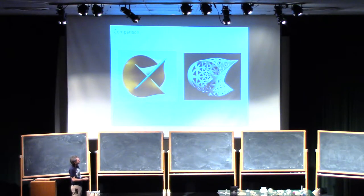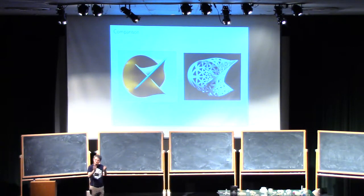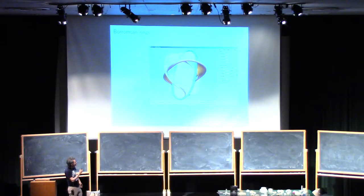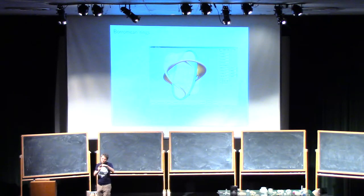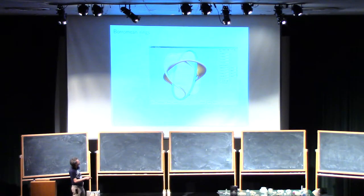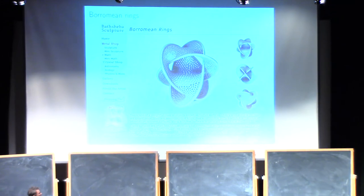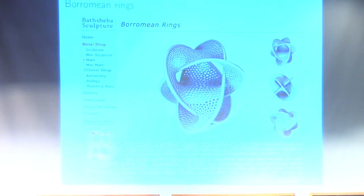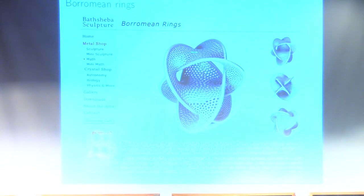The problem with our method is that it only works for torus knots and links — knots and links you can put on the surface of a torus — whereas the iterative method can work with anything. Here's an example: the Borromean rings, not the same as the link I was showing before. Borromean rings are these famous sets of rings where no two of them are linked, but if you cut one the other two fall apart — it's somehow a symbol of unity. This was turned into a mesh and then a 3D print by Bathsheba Grossman, one of the real pioneers in 3D-printed mathematical artwork. We wouldn't have been able to do this because the Borromean rings are not a torus link, whereas the iterative method doesn't care, it just gets on with it.